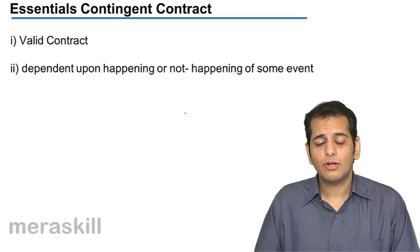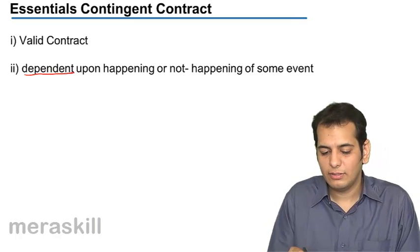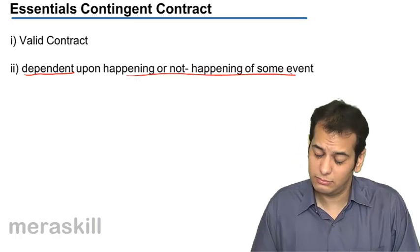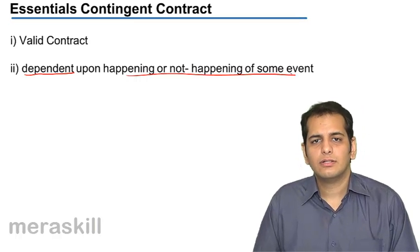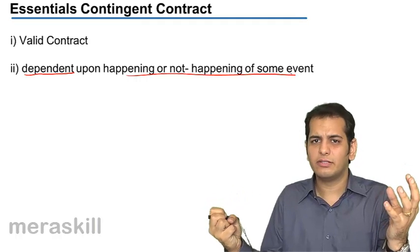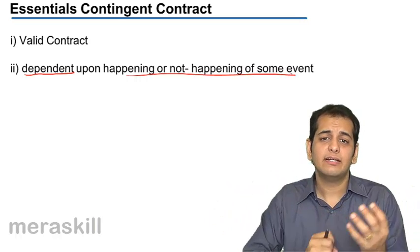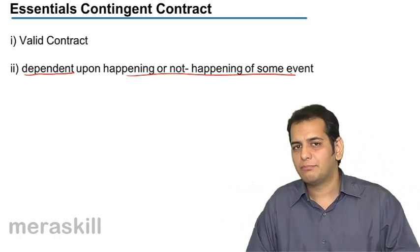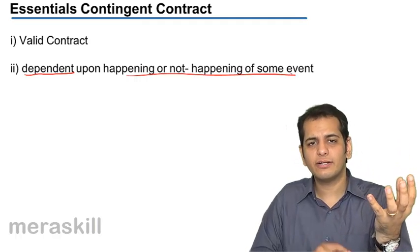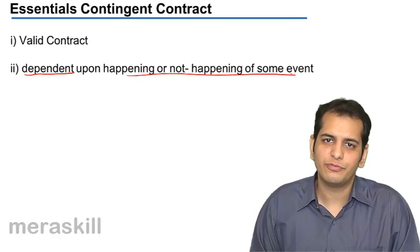Next, contingent contracts are always dependent upon the happening or non-happening of some event. A contingent contract will always be dependent on some collateral event, and the happening or non-happening of this event will decide if the contract will be performed or not. In short, the contingent contract is dependent upon the happening or non-happening of the event.